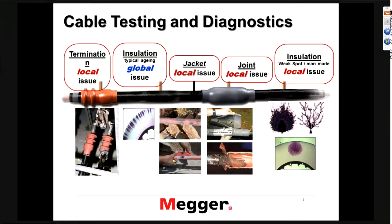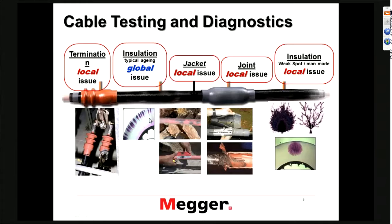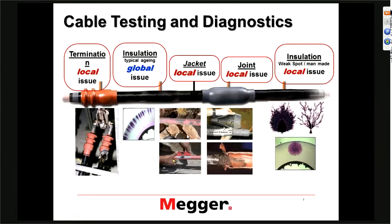Here you see terminations — one good, one bad. On the global aging of the insulation, you see a very consistent number of water trees, and especially the size of these water trees is very consistent. That is a typical aging condition of an XLPE cable. The jacket shown here happened to be a wind farm cable — on the bottom photo you can see it blew right through the insulation.